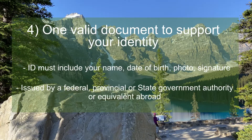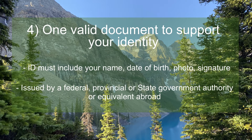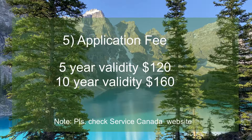The number four requirement is one valid document to support your identity. The ID you must submit must include your name, date of birth, photo, and signature, and must be issued by a federal, provincial, or state government authority or equivalent abroad. Examples are a foreign passport or driver's license. If you are submitting a photocopy of your driver's license or foreign passport, it must be signed and dated by your guarantor.